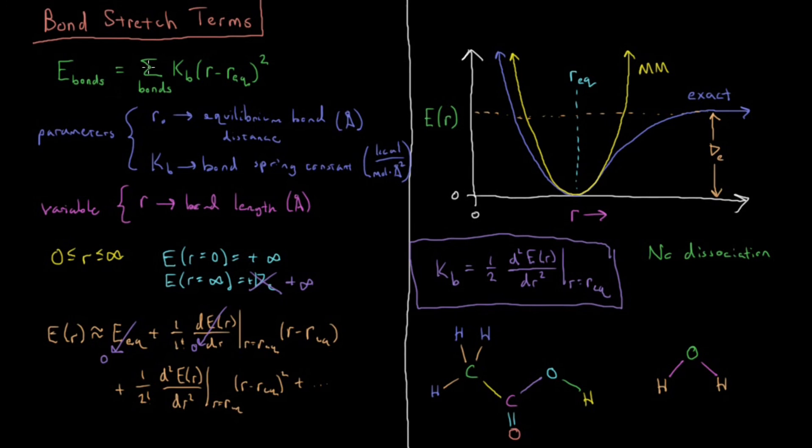And for specifying what all the bonds are in the system, that's generally done internally in whatever program you're using. But if you were doing it manually, what you would do is just look at your system and see where all your covalent bonds are. So in this case, I see one, two, three, four, five, six, seven bonds in acetic acid there, and two bonds in water.